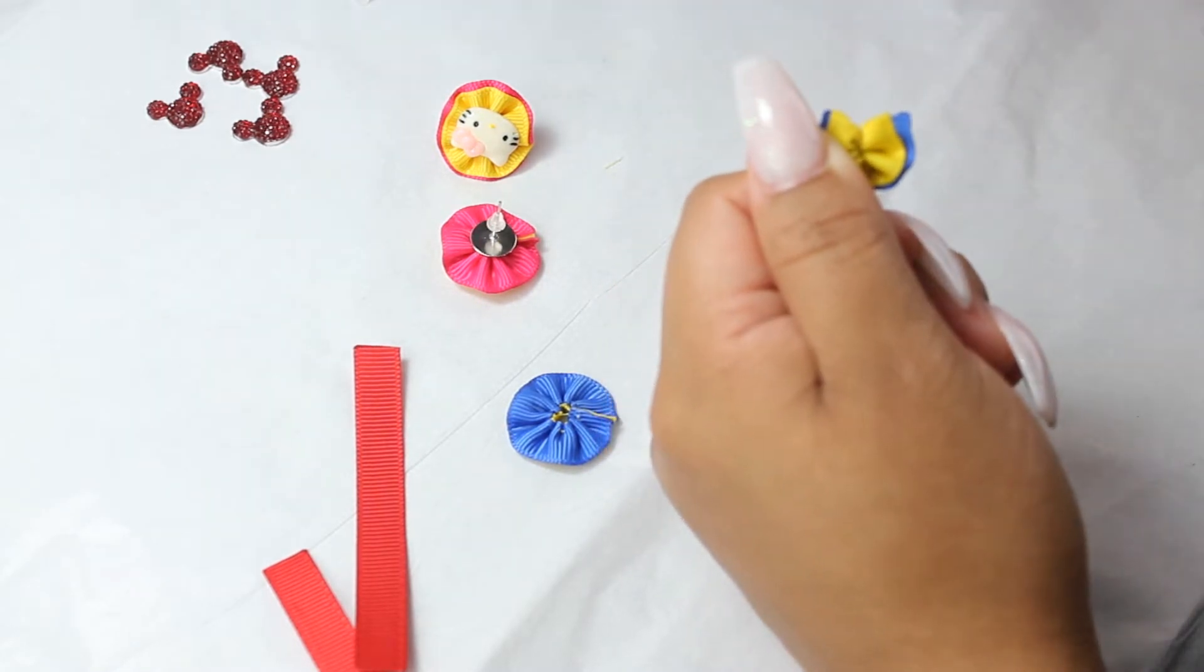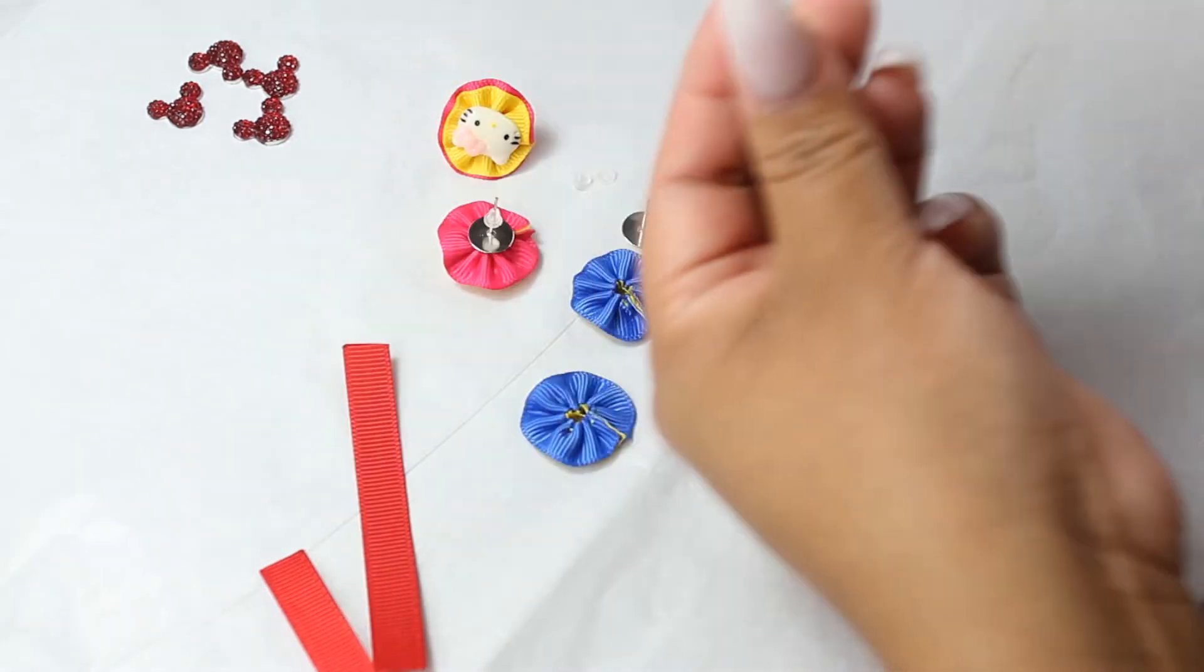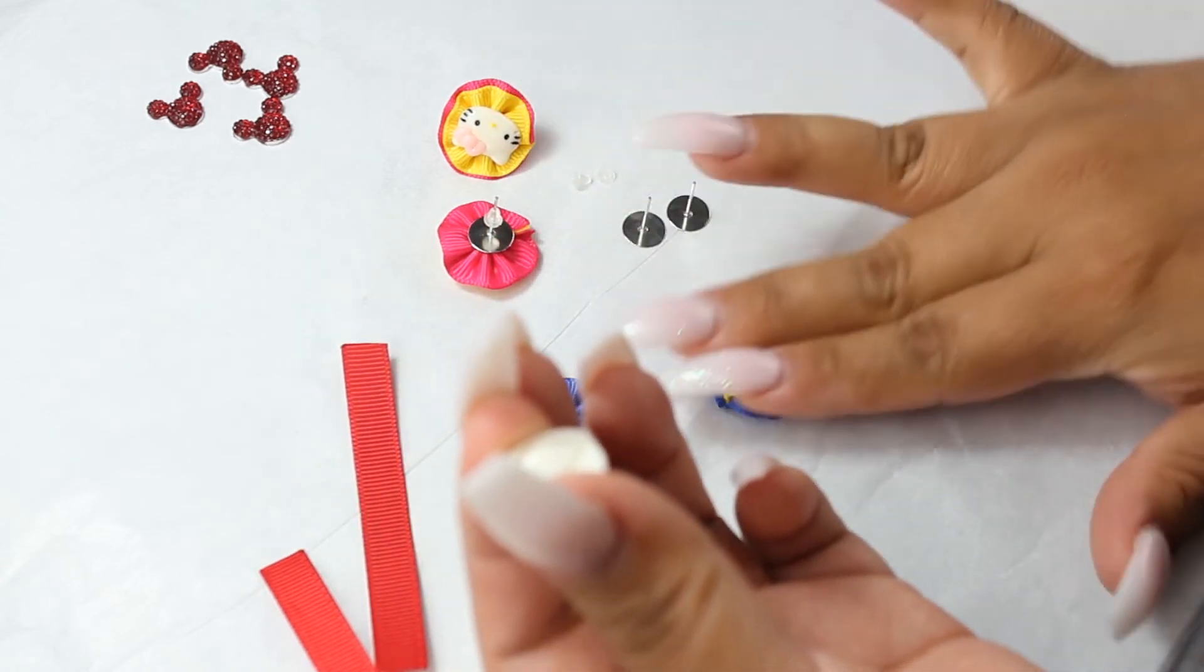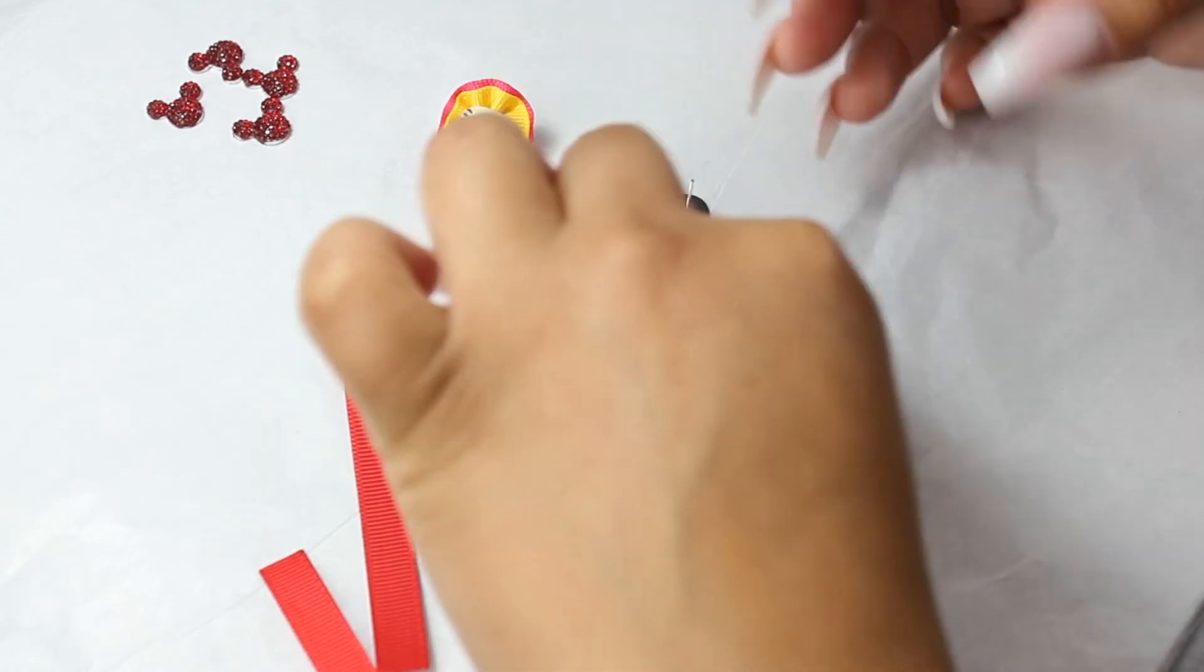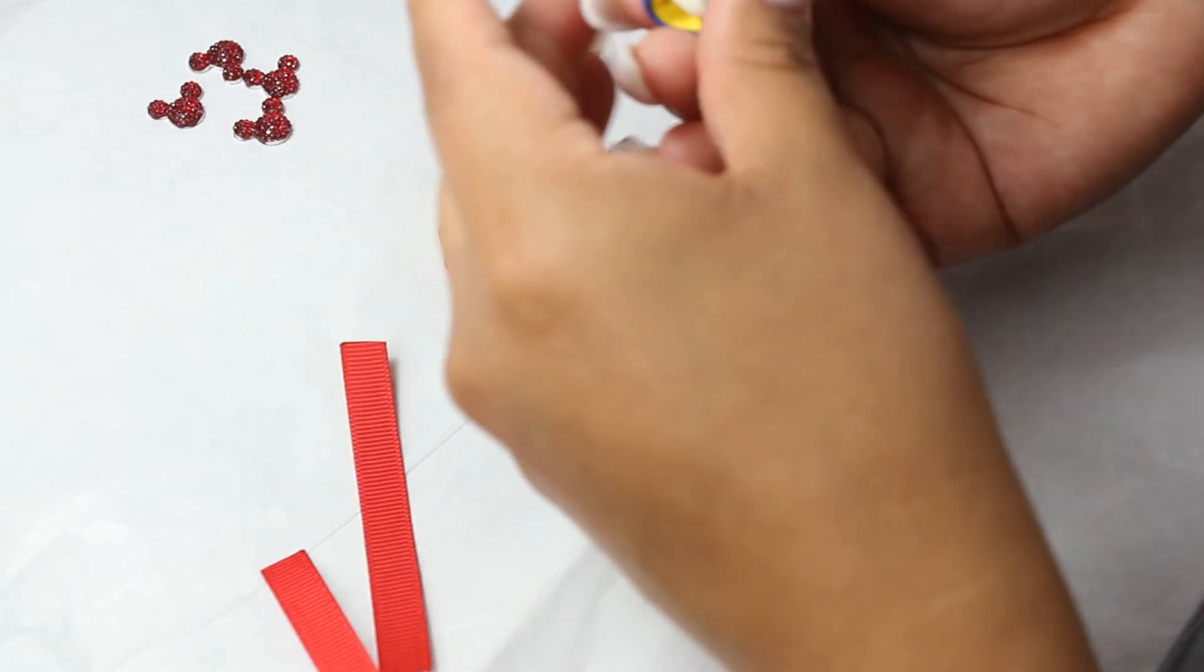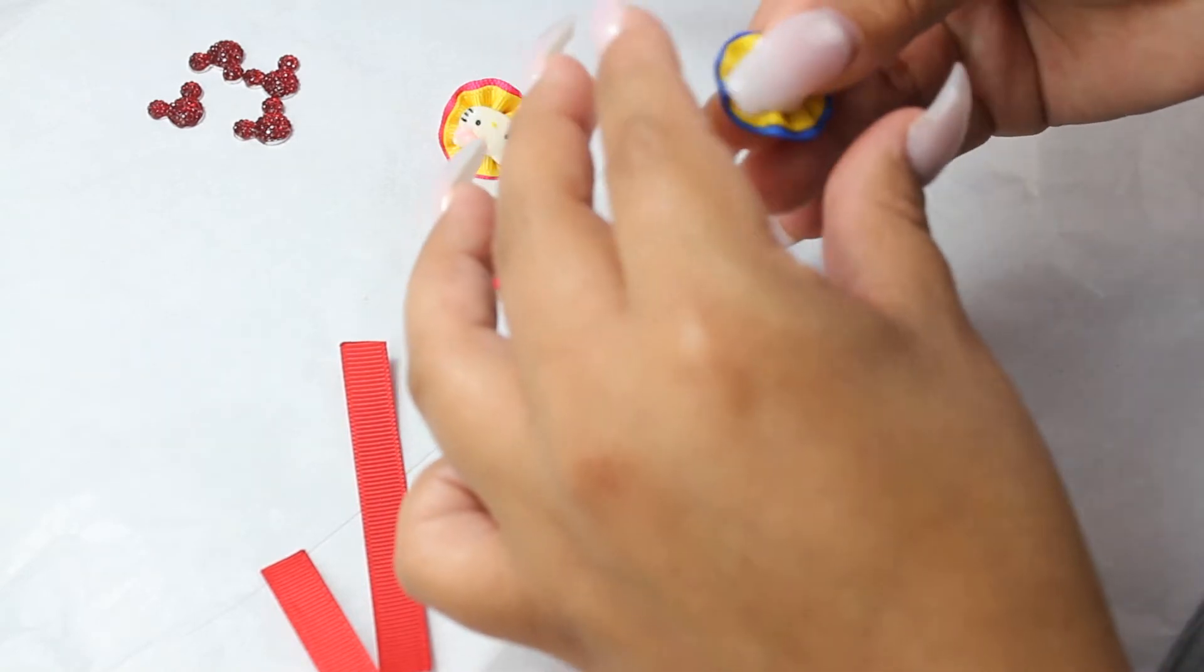Now you have both looking the same. Grab your resin, go ahead and add a little bit of glue. Let's flip these over carefully, add them to the ribbon. Go ahead, just be careful when pressing down because that little glue is going to go through that little hole in the back.